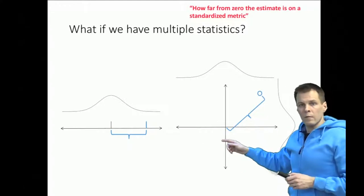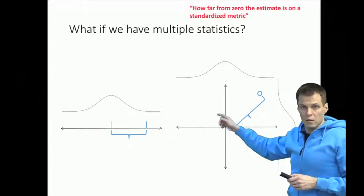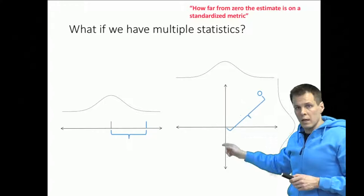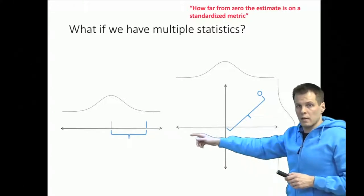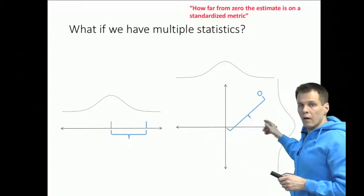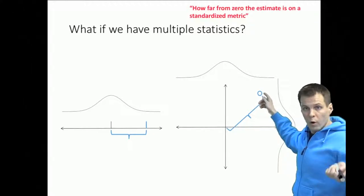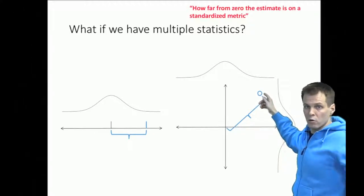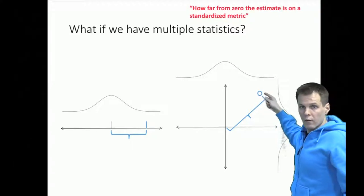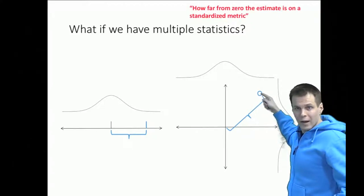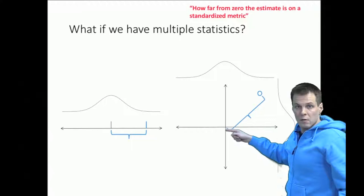So when we have two statistics then we have a plane. So we have x, we have y here and we have x here and then we have an estimate here. So we have estimate of both regression coefficients 1 or 2, 1 and 2 or y and x whatever. And we want to know how far again we are from the zero point.